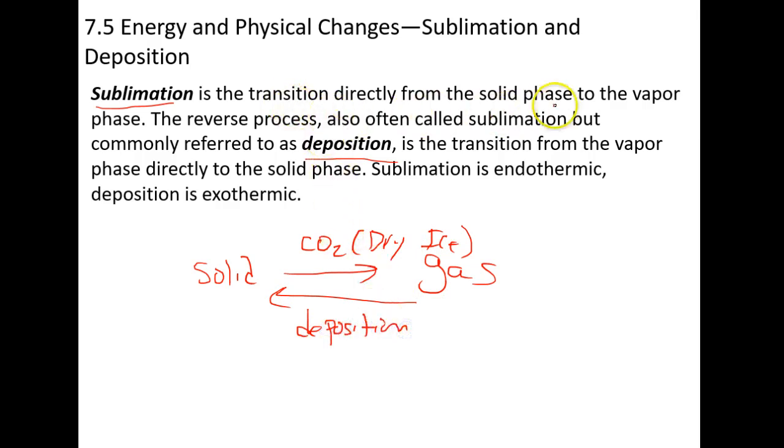So sublimation is transition from a solid to a vapor. The reverse process is called deposition. Sublimation is endothermic. That makes sense. You take dry ice. You put it out at room temperature. It's absorbing heat. Heat's going into it. It's turning into a vapor. And deposition is the opposite.